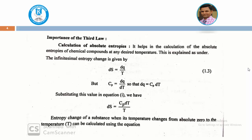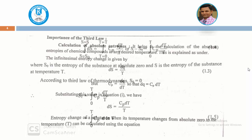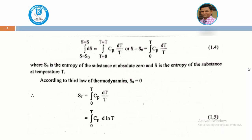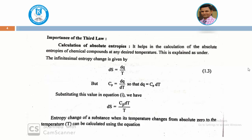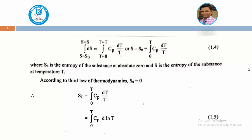The entropy change of a substance when its temperature changes from absolute zero to a certain temperature T can be calculated using this equation. Integrating ds = Cp·dT/T within the limits — entropy from s₀ to s, and temperature from T₀ to T — we get s minus s₀ = integral from 0 to T of Cp·dT/T. Here, s₀ is the entropy of the substance at absolute zero, and s is the entropy at temperature T.